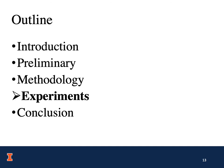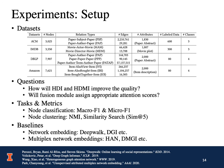We evaluate our proposed approach on four real-world datasets: ACM, IMDB, DBLP, and Amazon. ACM and DBLP are two paper-paper networks, IMDB is a movie-movie network, and Amazon is a product-product network. We evaluate our methods on two types of tasks. The first is node classification, using macro-F1 as an evaluation metric. The second is node clustering, using normalized mutual information (NMI for short) and similarity search to evaluate the quality of the node clustering.